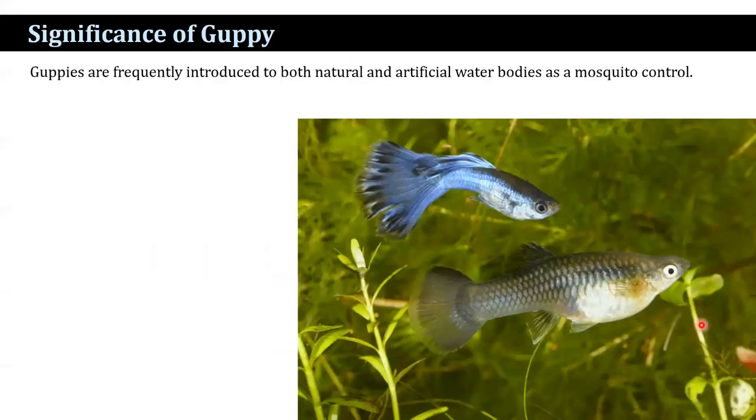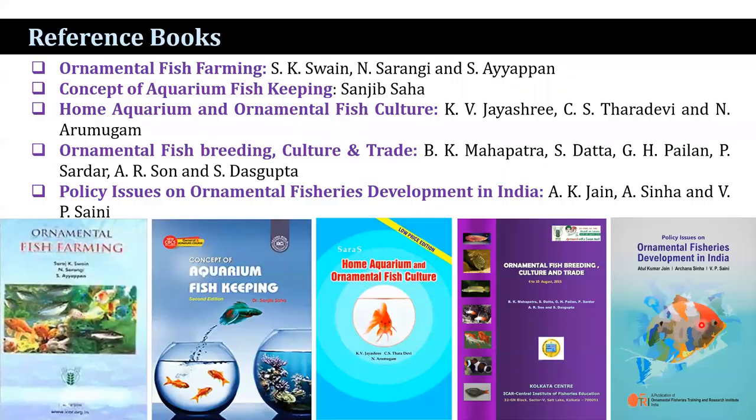Guppies are frequently introduced to both natural and artificial water bodies as a mosquito control measure.